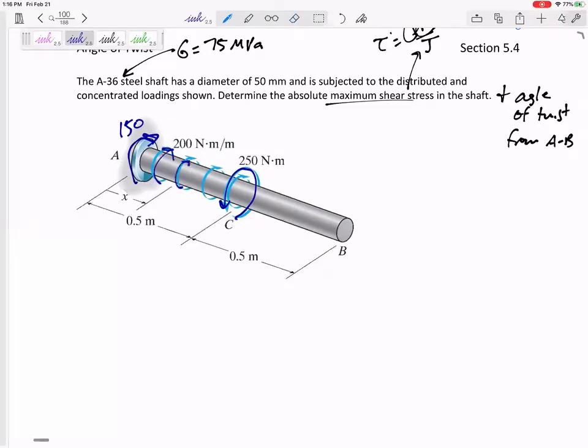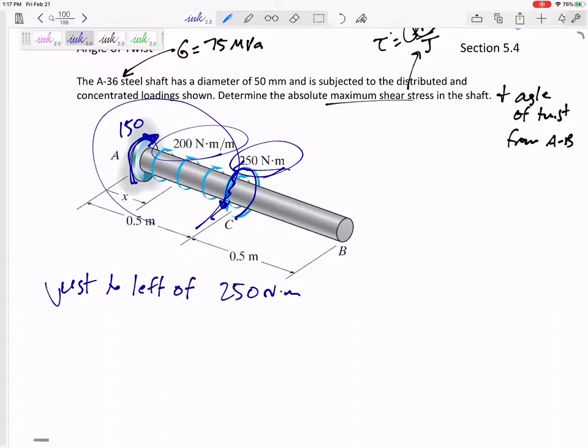So what I've really got is I've got 150 and then I have this distributed load and then I've got 250 pushing it back. I've got 150 at the wall going that way, and then I start having this distributed load that's going the same direction as the 150. So imagine if I was cutting it here, it'd be 150 plus a little bit of distributed load. I would need maybe 175. If I cut it a little bit further, I would need 200. If I cut a little bit further, eventually I would get to this point right before the 250 Newton meter concentrated load.